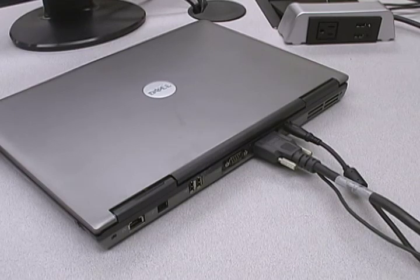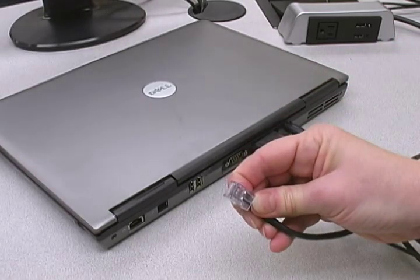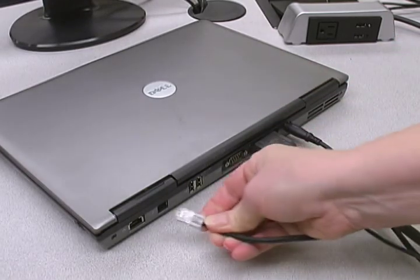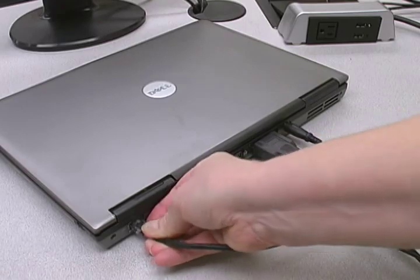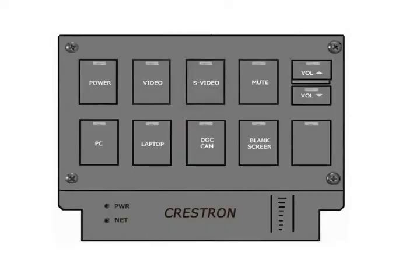If you would like to connect to the internet from your laptop, plug the network cable into your laptop. Press the laptop button on the control panel. This will allow you to see the laptop screen on the projection screen in front of the classroom.